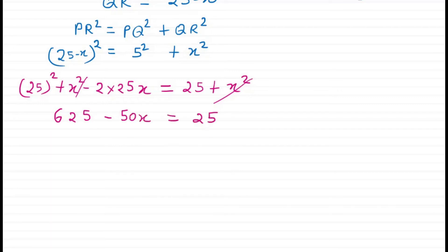The square of 25 is 625 minus 50x equals 25. From here, 625 minus 25 equals 50x, so 600 equals 50x. Therefore, x equals 12.